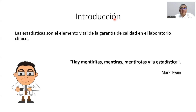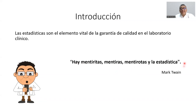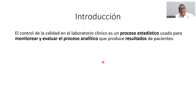Cuando hablamos de las herramientas de Tendencia Central, tenemos que abordar la estadística y su contexto de análisis numérico, donde tenemos que saber interpretar la información y lo que estamos viendo en las gráficas. Una mala interpretación por falta de conocimiento puede llevarnos a caer en las 'mentiritas, las mentiras y la estadística'. El control de la calidad en el laboratorio clínico es un proceso estadístico usado para monitorear y evaluar el proceso analítico que produce los resultados emitidos.